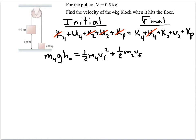for our 2 kilogram block, plus our MGH for the 2 kilogram block, and 1 half I omega squared for the pulley.